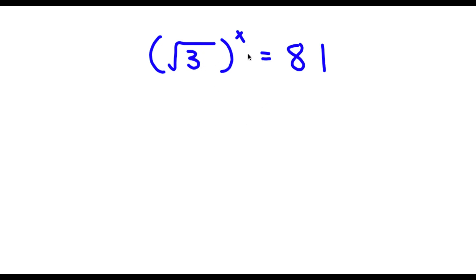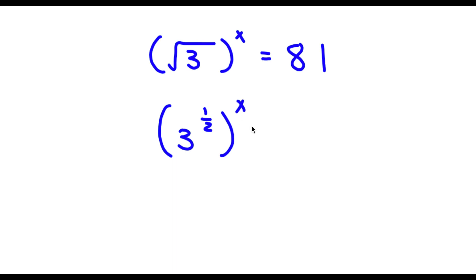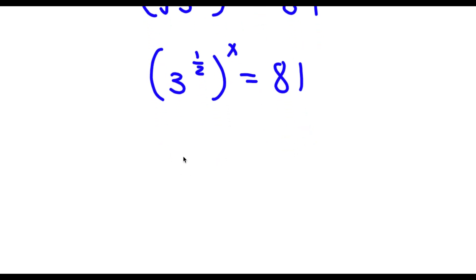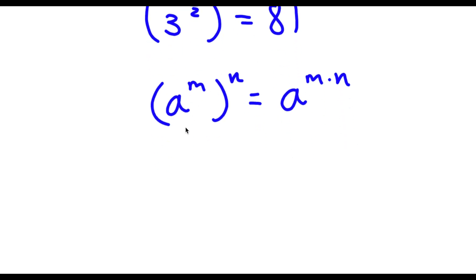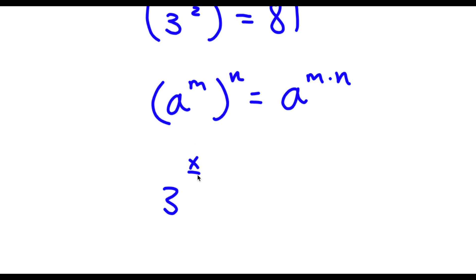Alright, so I have square root of 3 to the power of x is equal to 81. Now the square root of 3 is the same thing as 3 to the power of 1/2. So now I have 3 to the power of 1/2 to the power of x is equal to 81. Now if I have something in the form a to the power of m to the power of n, this is equal to a to the power of m times n. So in this case, 3 to the power of 1/2 to the power of x equals 3 to the power of 1/2 times x.